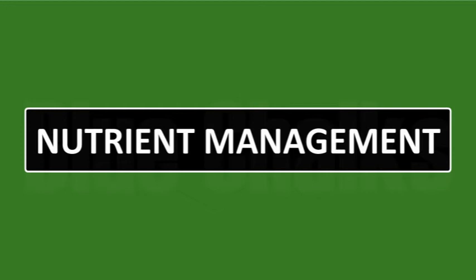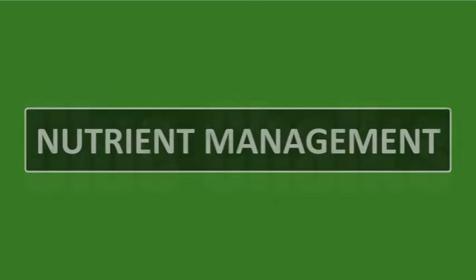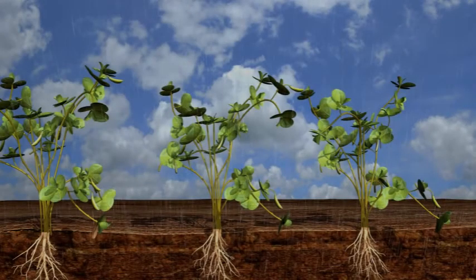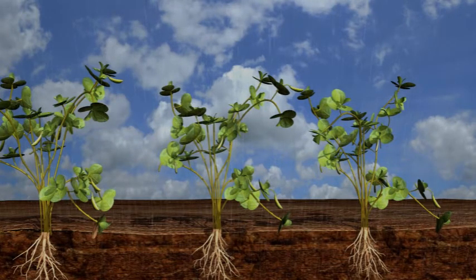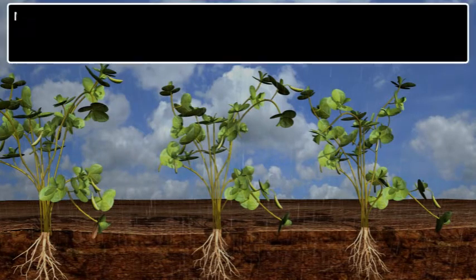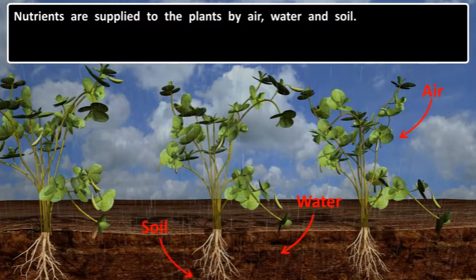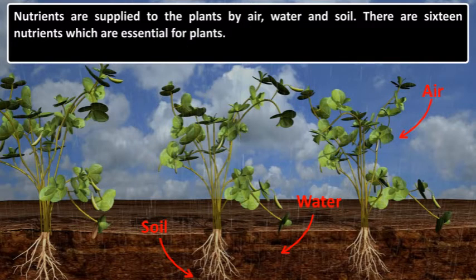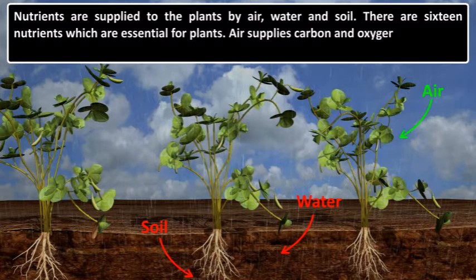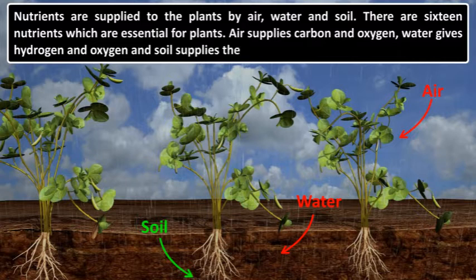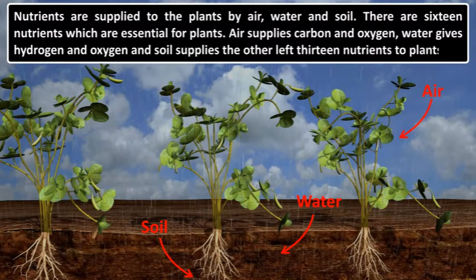Nutrient Management. As we require food for development and growth, the same way plants also require nutrients for growth. Nutrients are supplied to the plants by air, water, and soil. There are 16 nutrients which are essential for plants. Air supplies carbon and oxygen, water gives hydrogen and oxygen, and soil supplies the other 13 nutrients to plants.